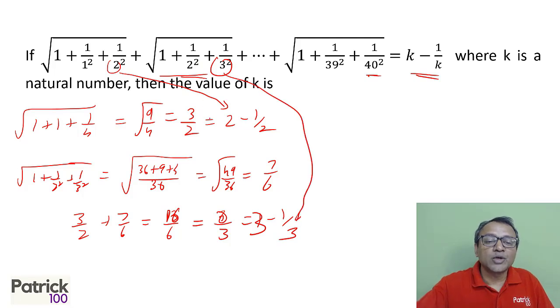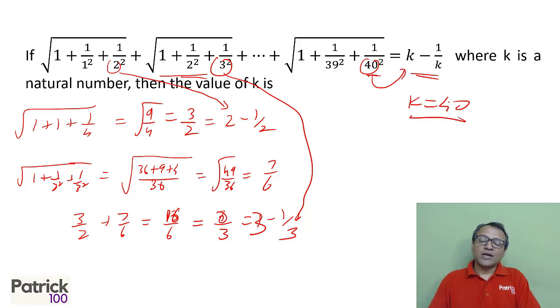So when the last term is 40, you will get k as 40. Pattern recognition. You look at smaller cases, try to find your value. It will be same for larger. When the last is 2, I get 2 here, 2 minus half. Last is 3, I get 3 minus 1 by 3. So when it is 40, I will get 40 minus 1 by 40. So k will be 40.